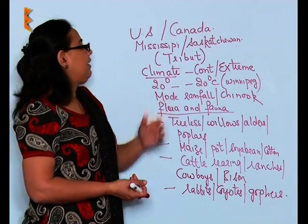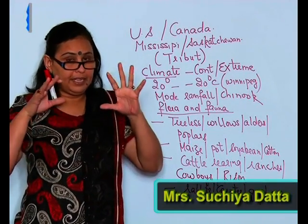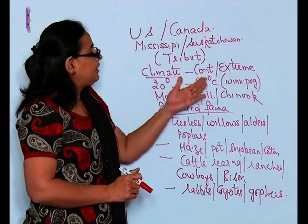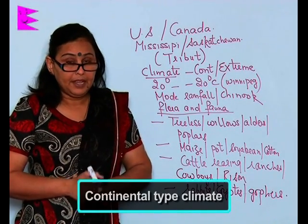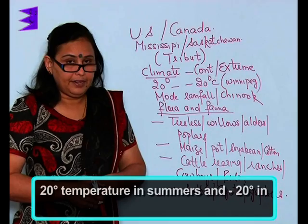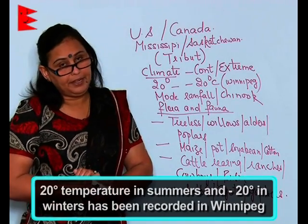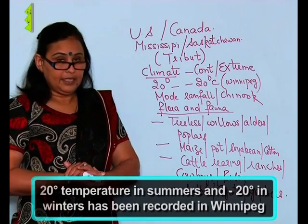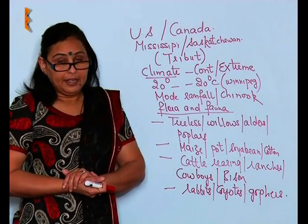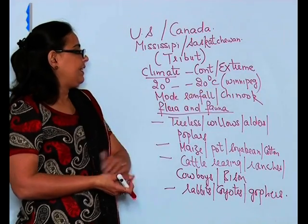Now let's move on to the kind of climate which the prairies experience. Since it is found in the heart of the continent, the climate experienced here is the continental type, that is extreme climate. You can experience 20 degree temperature in the summers and in the winters it goes to minus 20 degree centigrade, and this is experienced by the place called Winnipeg.